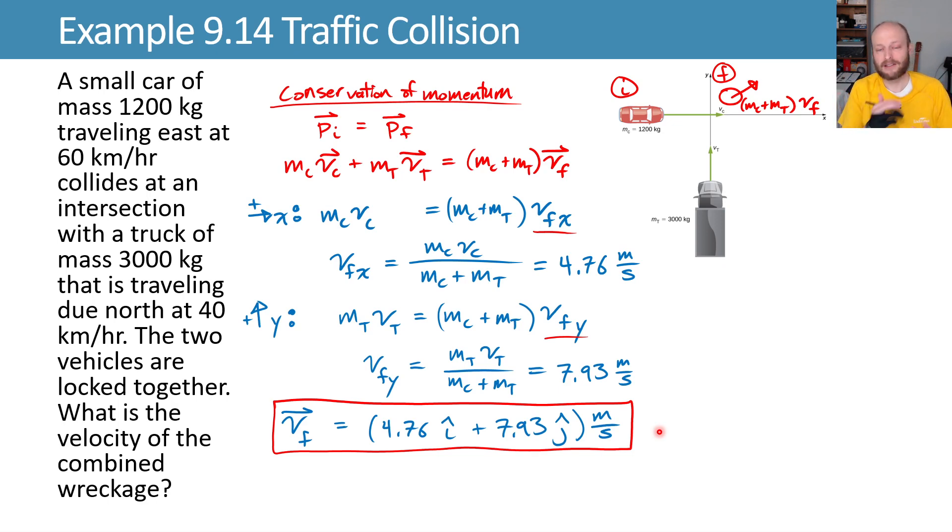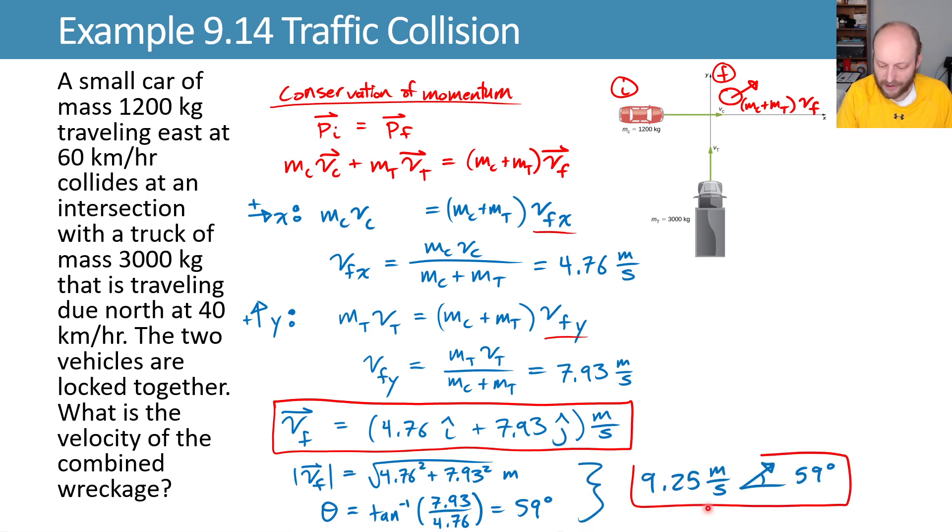If you want it as magnitude and direction though, what we can do is we can, as we've done before, square these components, add them, take the square root to get the magnitude, and also do the inverse tangent of the ratio to get the direction. Here you go. We get 9.25 meters per second as our magnitude in a direction that's 59 degrees above the horizontal.